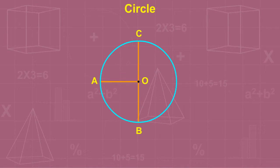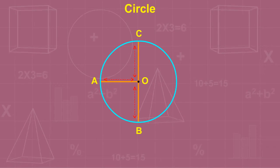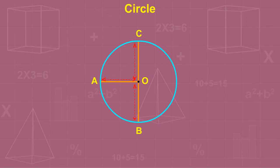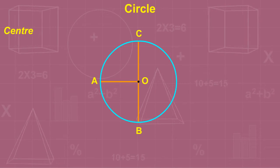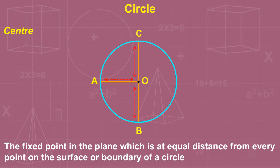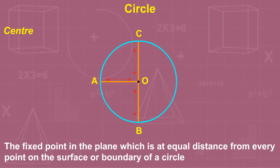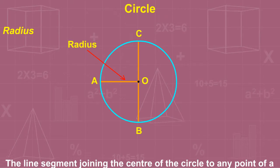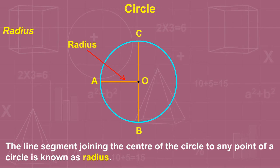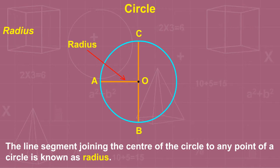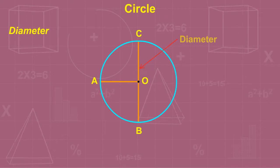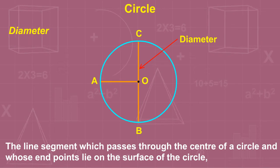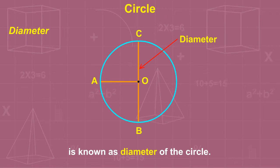A circle is a simple closed curve of all points that are equidistant from a fixed point on a given plane or surface. The fixed point which is at equal distance from every point on the boundary of the circle is known as the center. The line segment joining the center of the circle to any point on the circle is known as the radius. The line segment which passes through the center of a circle and whose endpoints lie on the circle is known as the diameter.